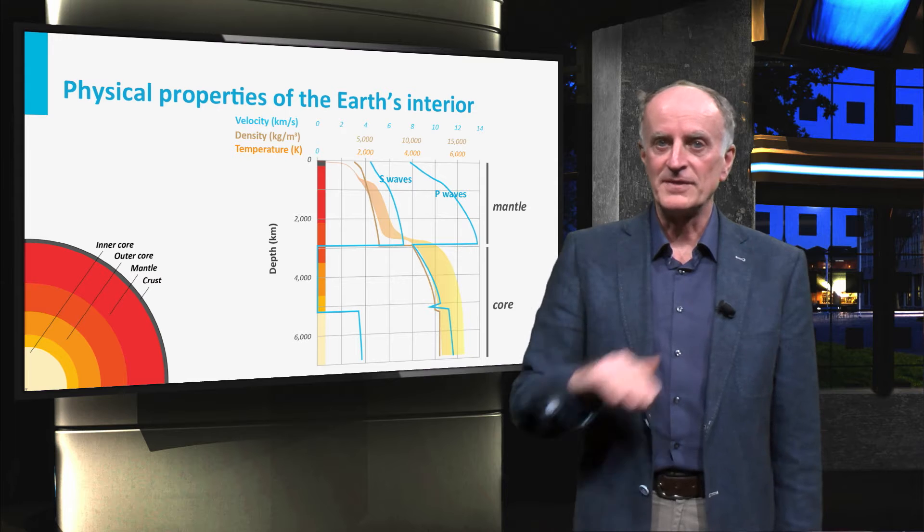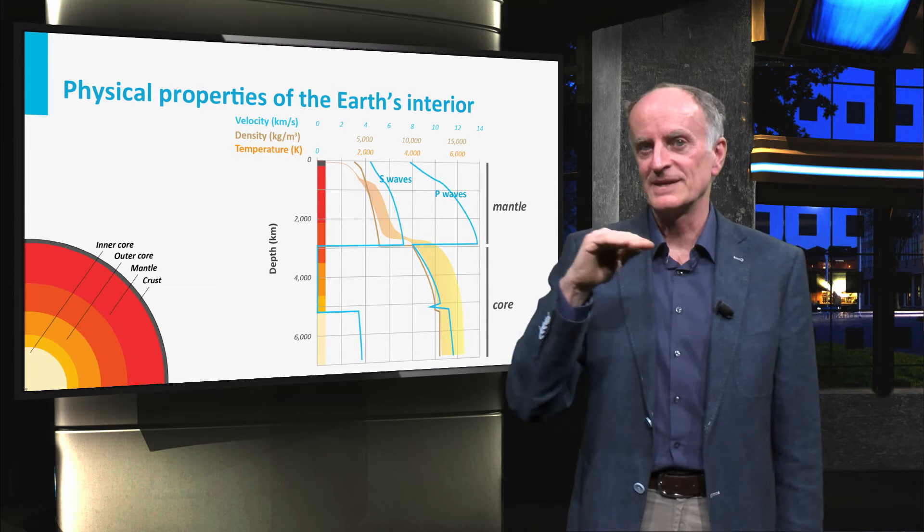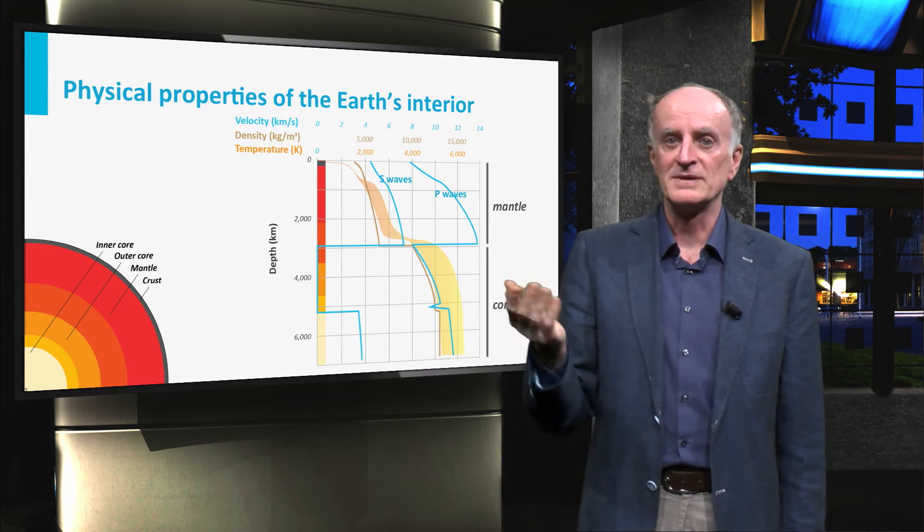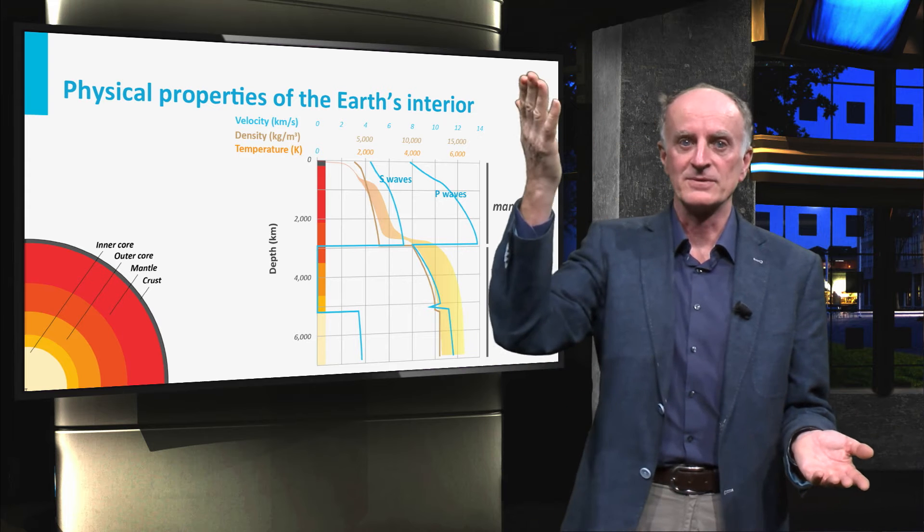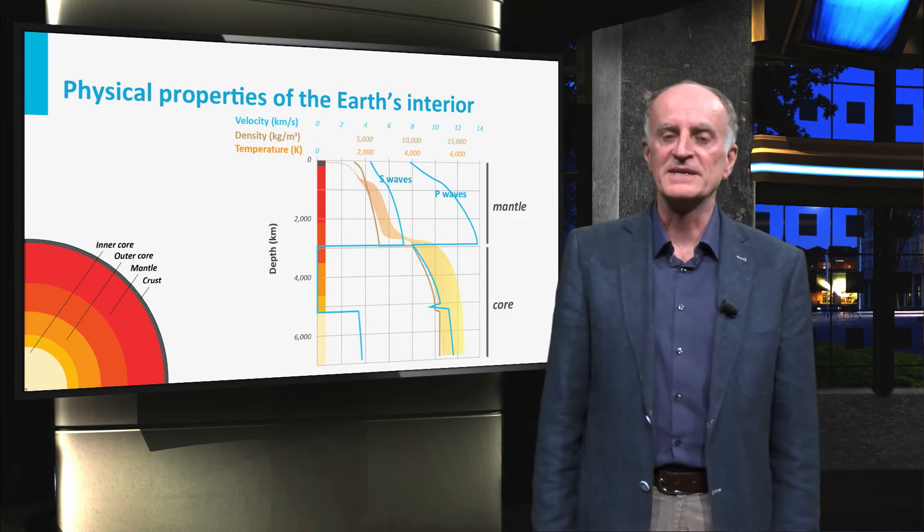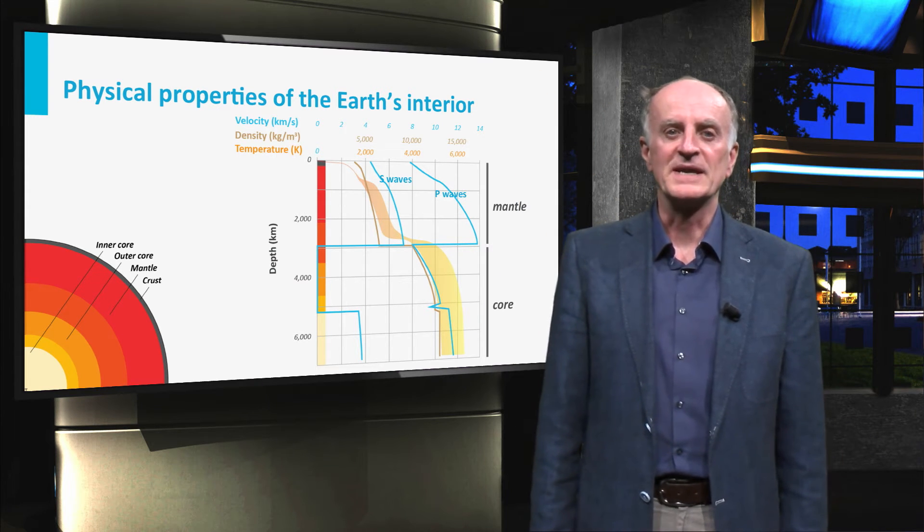The depth of 3000 km is a fundamental discontinuity in the Earth and forms the boundary between the core and the mantle. The two domains have different composition, physical properties and behaviour.